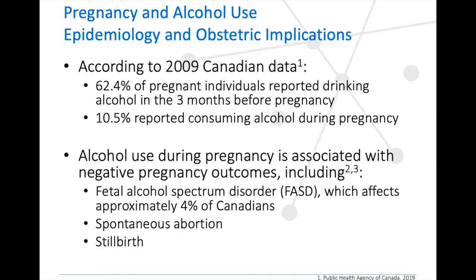To get started, a little background around the prevalence of alcohol use during pregnancy. Whenever we're talking about prevalence of substances being used in pregnancy, it's really important to understand that this is always under-reported. There's huge stigma around using substances in pregnancy. Our most recent Canadian data, from 2009, reports 62.4% of pregnant individuals drank alcohol in the three months before pregnancy, and 10.5% reported consuming alcohol during pregnancy. American data from 2019 showed consumption rates of around 11.5% among pregnant people. This data does not reflect current trends during the global pandemic, where we are seeing increased use of all substances.